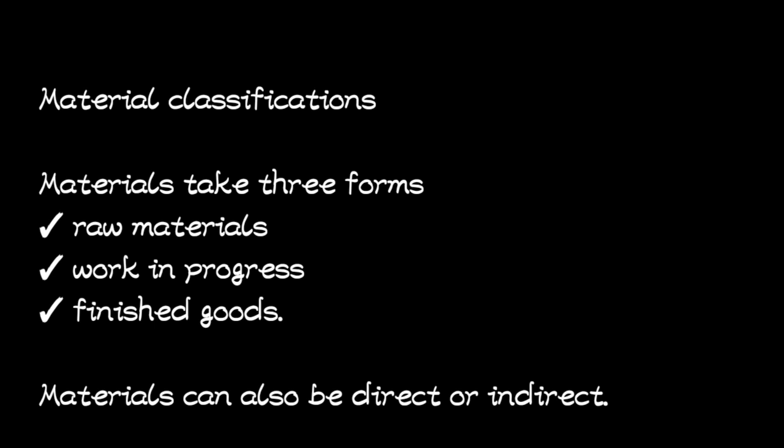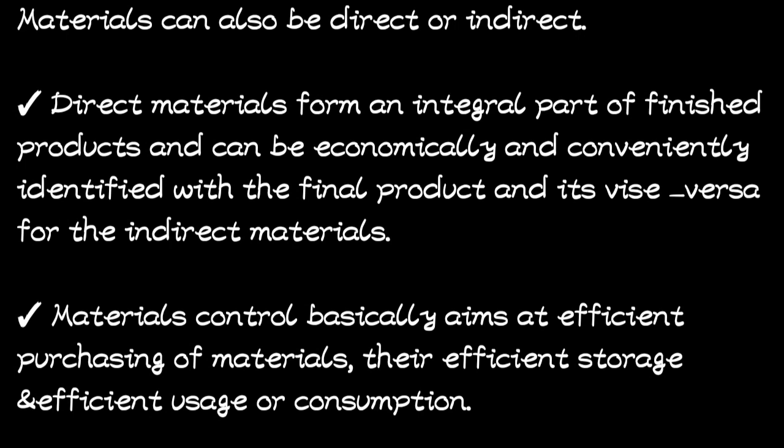Materials can also be classified as direct and indirect materials. Direct materials form an integral part of the finished product and can easily be identified with the final product. For example, in the process of baking a cake, there is sugar — you can feel it in the product. But the oven used in baking, or the charcoal or electricity used, you cannot feel when eating the cake.